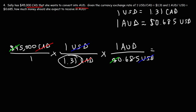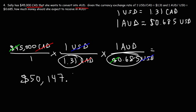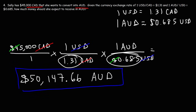Taking that result and dividing by 0.685 gives $50,147.66 Australian dollars. That's the answer for number four — now you know how to perform a double conversion if needed.